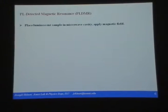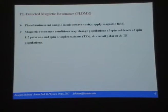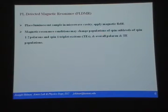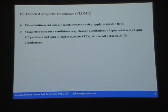In PL-detected magnetic resonance: we place a luminescent sample in a microwave cavity with a fine magnetic field, and so magnetic resonance conditions will typically change the populations of the spin sub-levels — the population of the plus spin-1/2 and the population of the minus spin-1/2 will change. And if some decay rates are spin-dependent, that might mean the overall population of the species carrying those spins will change. So if I have spin-1/2 polarons or spin-1 triplet excitons, their total population often does change under magnetic resonance conditions.